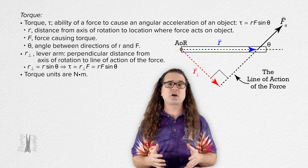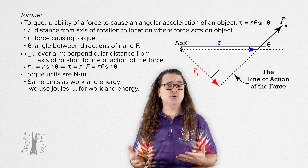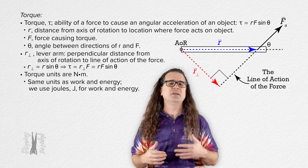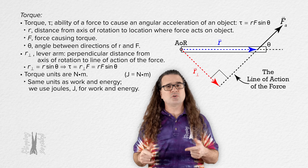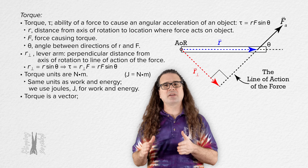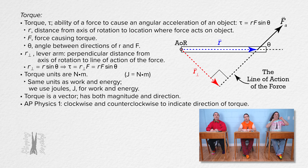The units for torque are newtons times meters, which is the same as the units for work and energy. However, we use the term joules for the units for work and energy to distinguish between the two — we use newton-meters as the units for torque and joules as the units for work and energy to identify them as different. Also, work and energy are scalars, however torque is a vector, therefore torque has both magnitude and direction. In AP Physics 1, we use clockwise and counterclockwise to indicate the direction of torque.